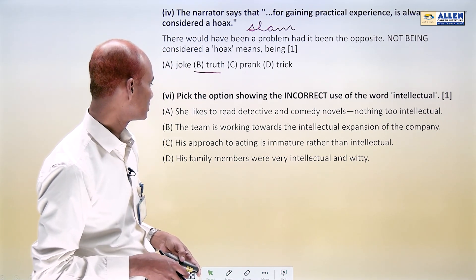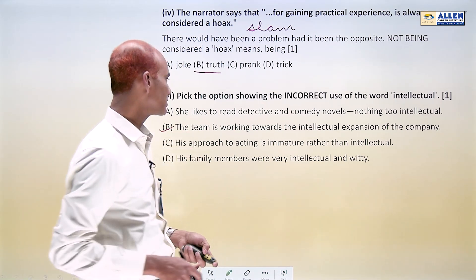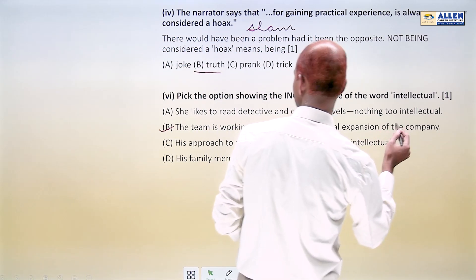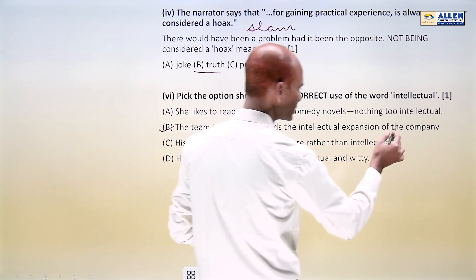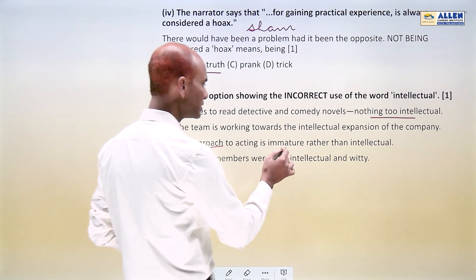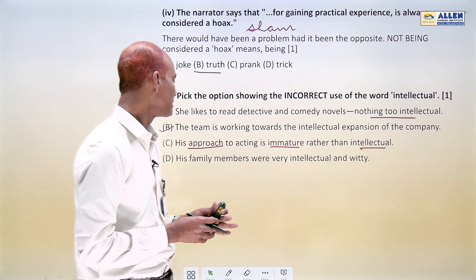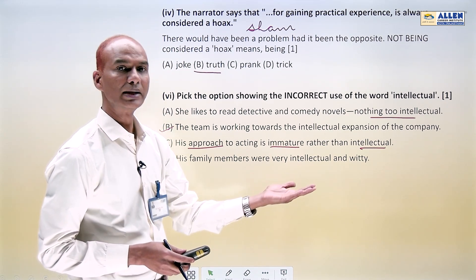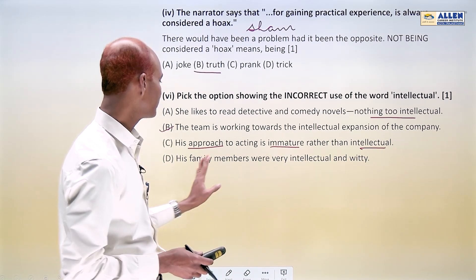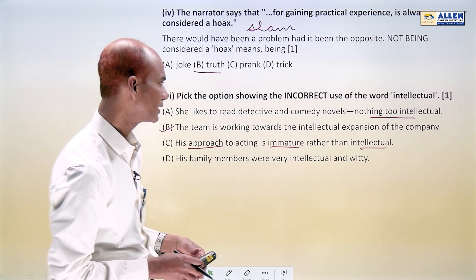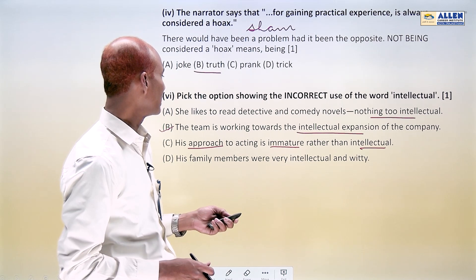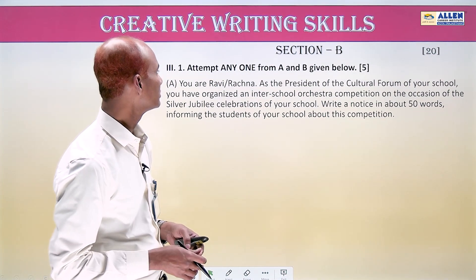Pick the option showing the incorrect use of the word 'intellectual.' 'She likes to read detective and comedy novels — nothing too intellectual about that' — fine. 'His approach to acting is immature rather than intellectual' — fine, both describe approach. 'His family members were very intellectual and witty' — fine. 'Intellectual expansion' is not the proper collocation — this is the incorrect usage and the correct answer.